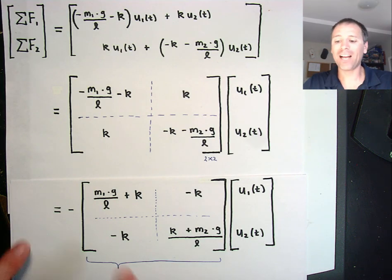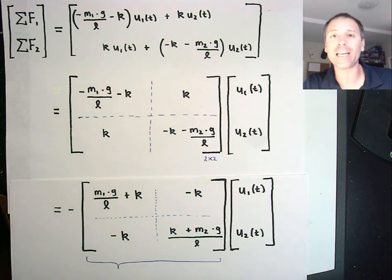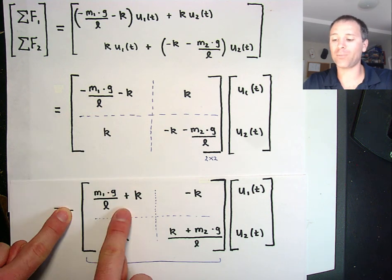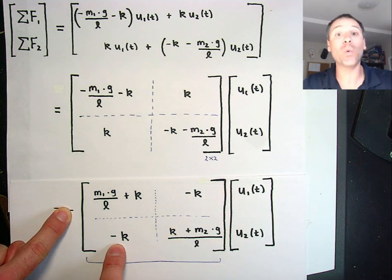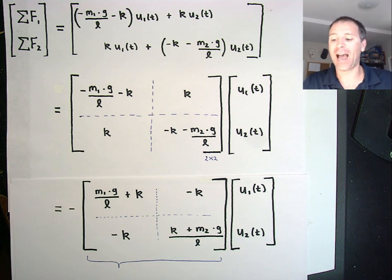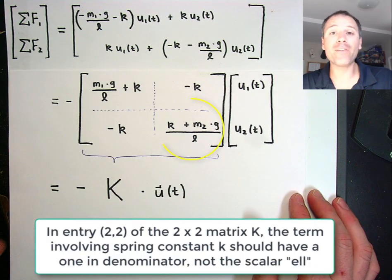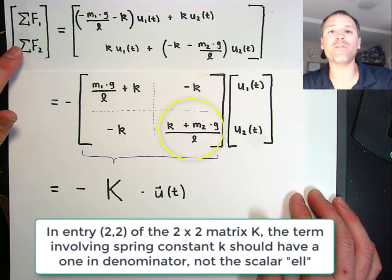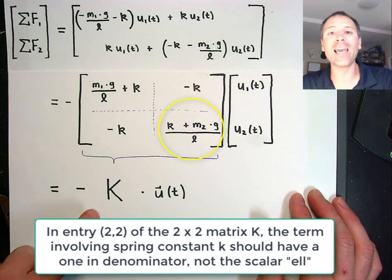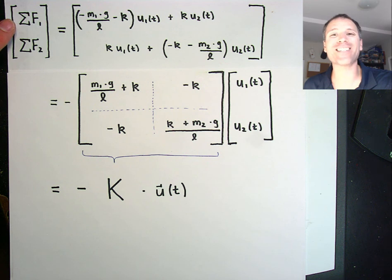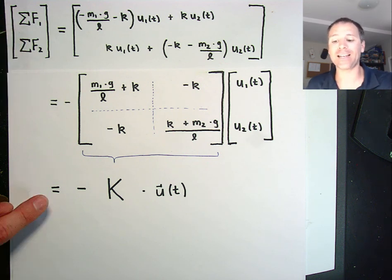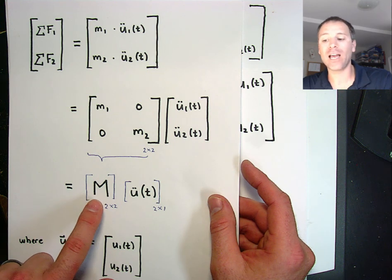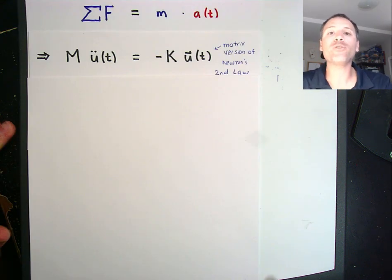Here's where we do a little algebraic magic: we factor out a negative sign from that matrix. Pulling out a negative from each entry, the first becomes all positive, entry 1-2 becomes negative, entry 2-1 becomes negative, and entry 2-2 becomes positive. We call this matrix K — the stiffness matrix. The sum of all forces acting on each component, written as a vector, is negative K times the displacement. We also know the sum of forces equals the mass matrix times the second derivative of the displacement vector. This leads to a matrix version of Newton's second law.